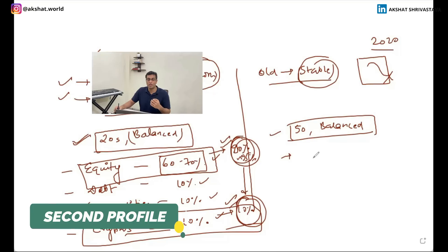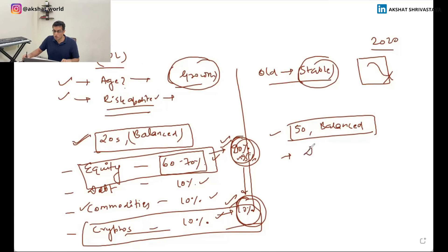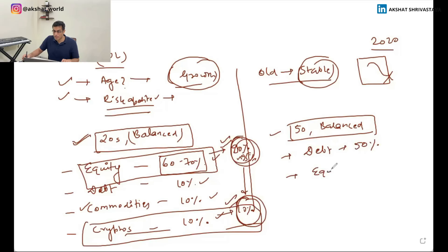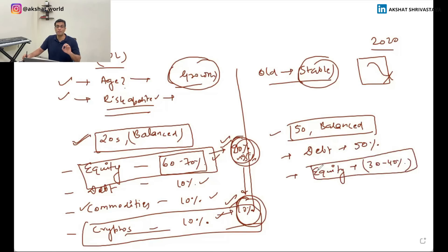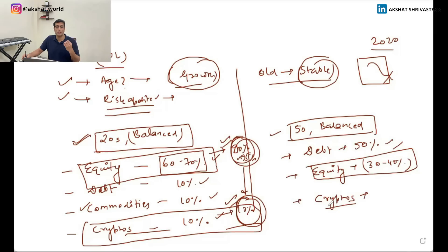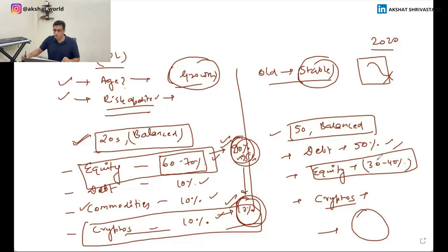Profile two: you're in your late forties or early fifties and need regular income flow. At least 40 to 50% should go into debt, and about 30 to 40% into equity — only large, stable blue-chip companies — to reduce volatility. I would not recommend investing in crypto at this stage, because the crypto market will take a long time to stabilize and its volatility will remain high. Take 10 to 20% in commodity bets and you are good to go.